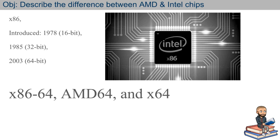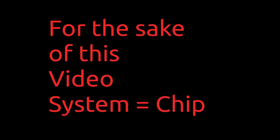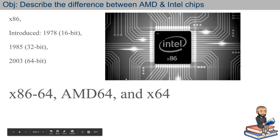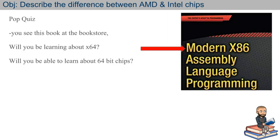If you don't really understand what I mean by instruction set, I do have a video on that. But basically it means a 64-bit address and/or operator — operands can also be 64-bits long, so we're talking very big numbers. These three terms — x86-64, AMD64, and x64 — are essentially the same thing, or have the same ability. There will be some nuances I cover in a bit.